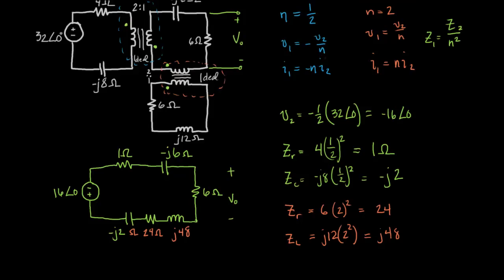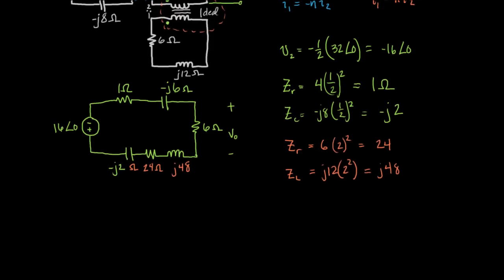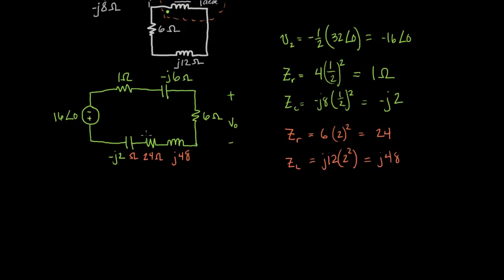Okay, and that's basically it. This is now solvable using any method that we've used before. If I want to find V0, well, I'll probably just find the current. I can do that really quickly by taking the voltage source and dividing it by the total impedance. Keeping in mind that the current, according to the battery, is traveling this way. So V0 is going to actually equal the negative of the voltage that we calculate across the resistor.